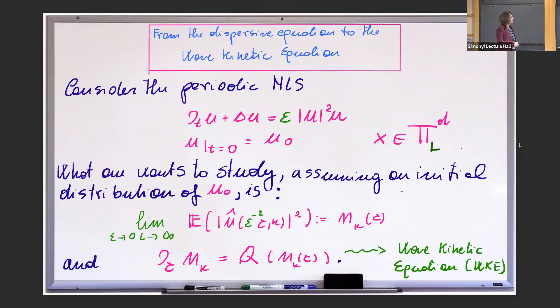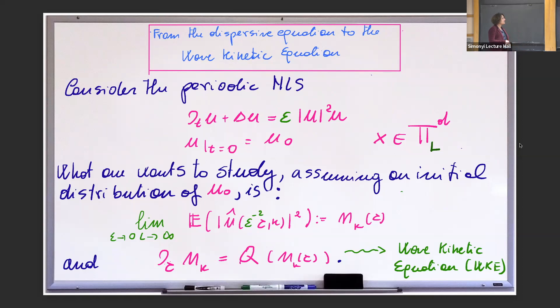Let's start with the same equation we have seen from the first lectures: the Schrödinger equation. If you remember, in the lectures up to yesterday, this number was either plus or minus one. I will always take plus one, the default case. So today it's a parameter epsilon, which is going to tend to zero. That's because we are interested in weakly nonlinear systems of dispersal equations, where the variable x is going to be in a box of size L with periodic boundary conditions.